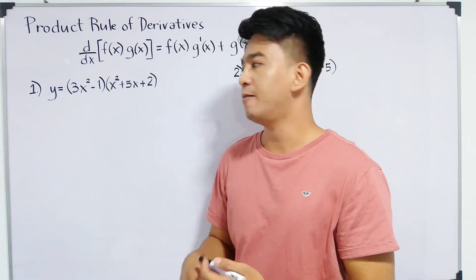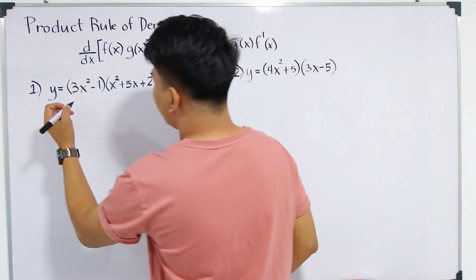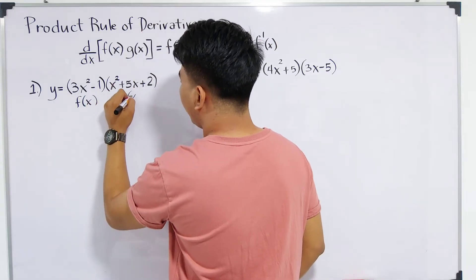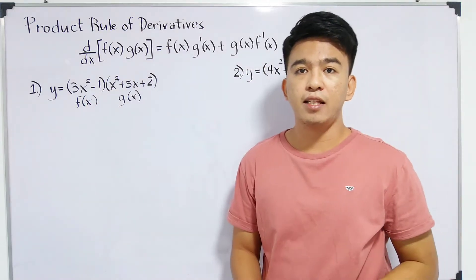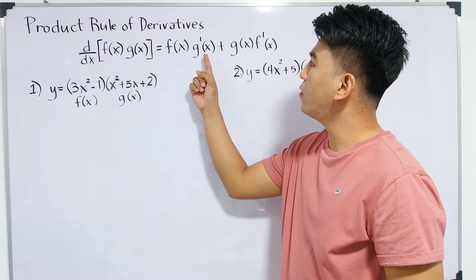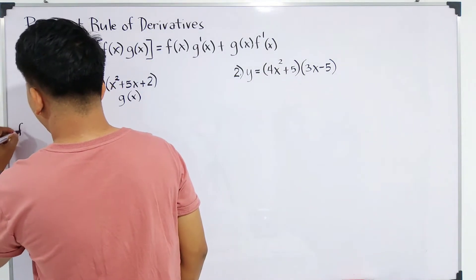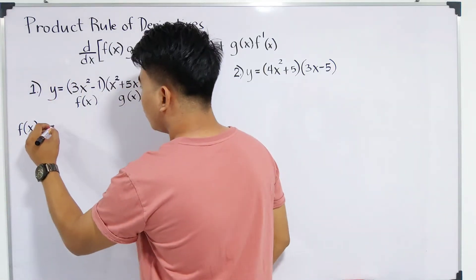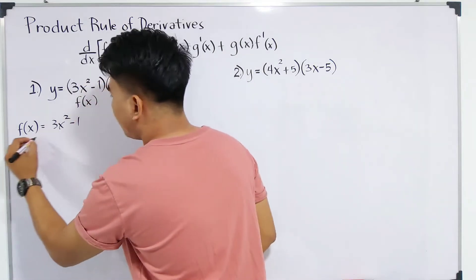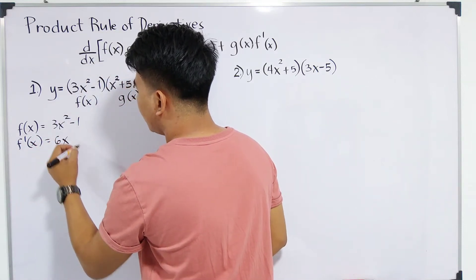How do we do it? First, you will assign which one is f of x and which is g of x. Usually, the first expression is your f of x, and this is your g of x. The next step is to get the derivatives of each function, because we need to get g prime of x and f prime of x. So, the first function is f of x is equal to 3x squared minus 1, and the derivative of this function, f prime of x, is simply 6x.